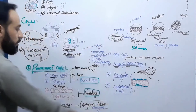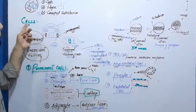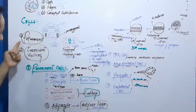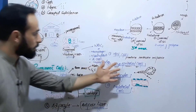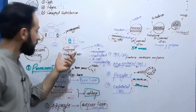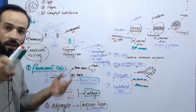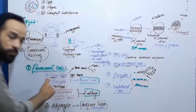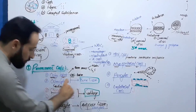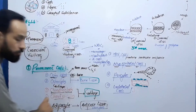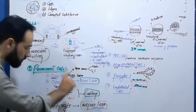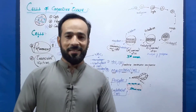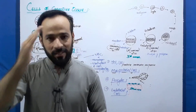So we have discussed the cells of the connective tissue — both permanent and transient cells. In the next lecture, we will start discussing osteoblasts, osteocytes, chondroblasts, and chondrocytes in detail. See you in the next lecture!